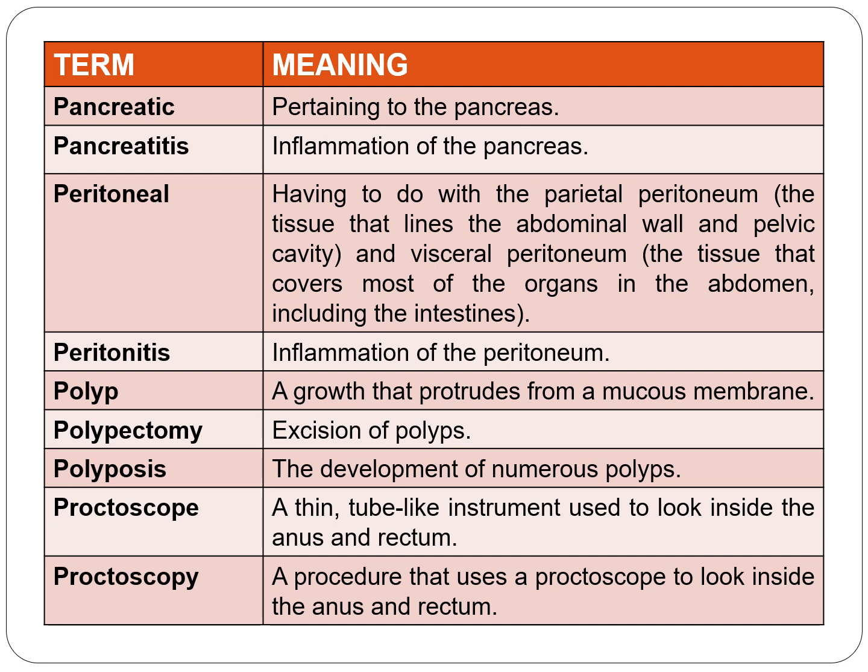Peritoneal refers to the parietal peritoneum or visceral peritoneum. The parietal peritoneum is the tissue that lines the abdominal wall and pelvic cavity, whereas the visceral peritoneum is the tissue that covers most organs in the abdomen including the intestines. Peritonitis is inflammation of the peritoneum. A polyp is a growth that protrudes from the mucous membrane. Polypectomy is excision of a polyp, and polyposis is the development of numerous polyps.